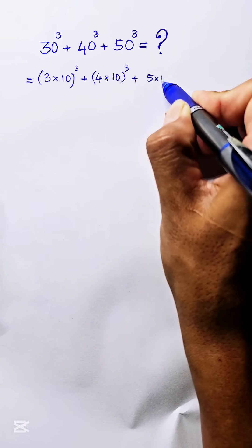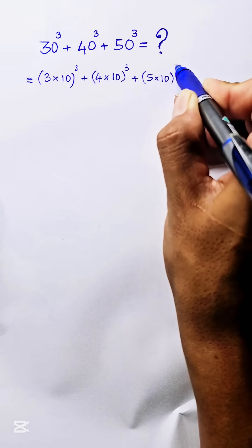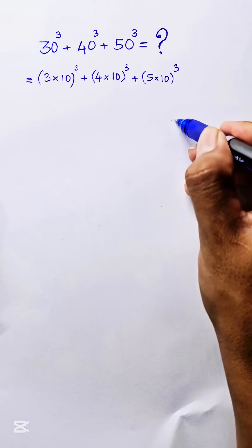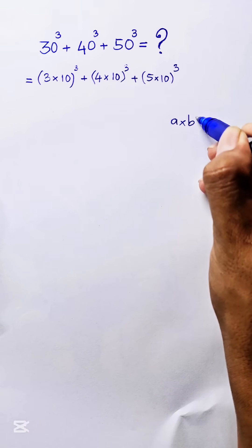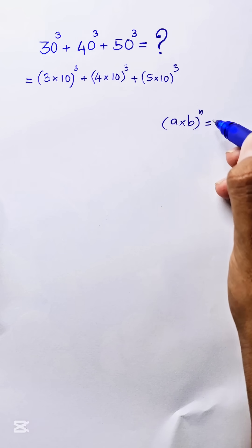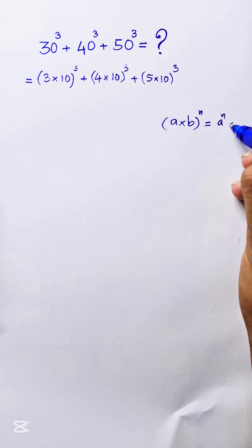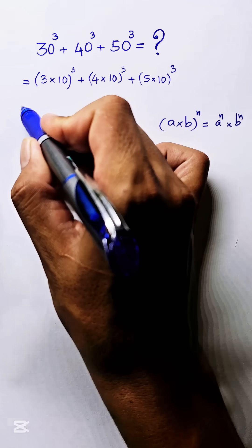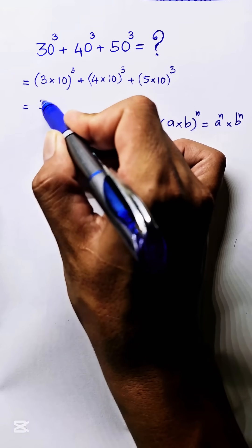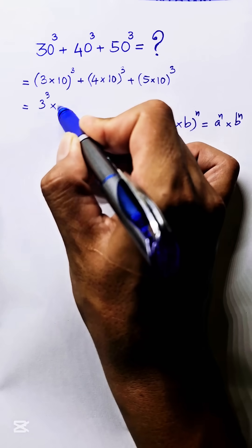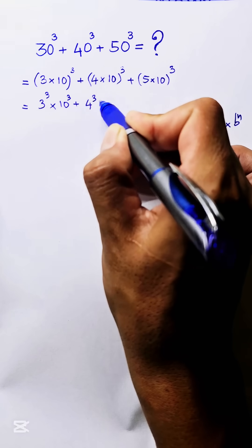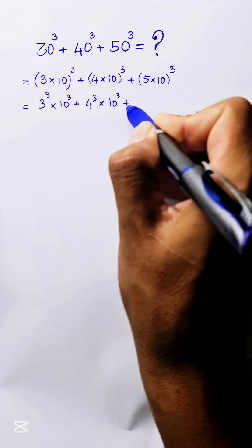Then we use the formula: if a times b all to power n is equal to a power n times b power n. So using this formula we get 3 power 3 times 10 power 3, plus 4 power 3 times 10 power 3, plus 5 power 3 times 10 power 3.